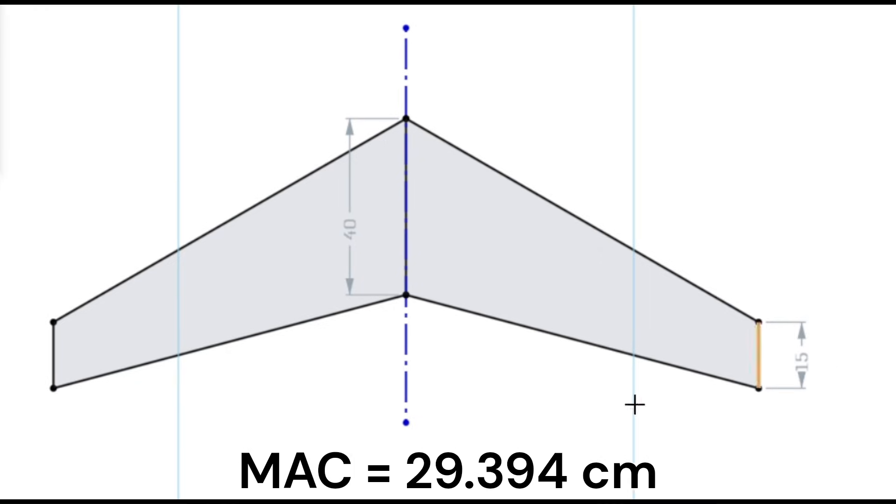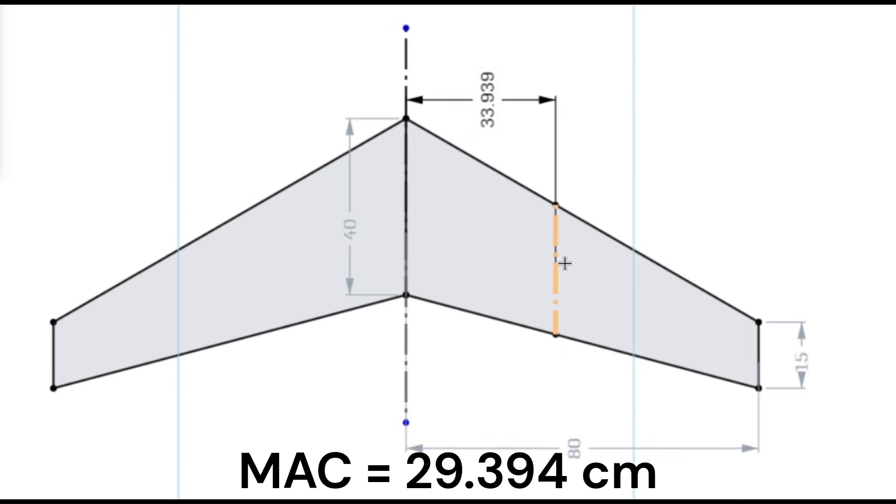Or, using the spanwise location formula, the half span is 80 cm, and this gives Y equals 33.939 cm. Using this in our sketch, we again get a MAC of 29.394 cm.